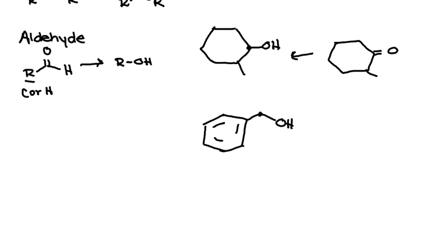And lastly here, now we have a primary alcohol. So this comes from an aldehyde, so we still have our benzene ring, but then coming off this carbon, we have an aldehyde.